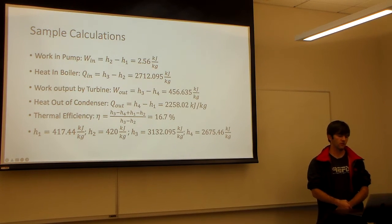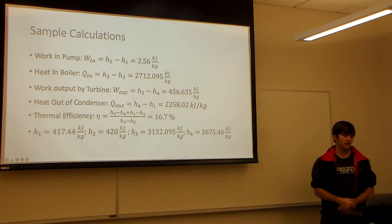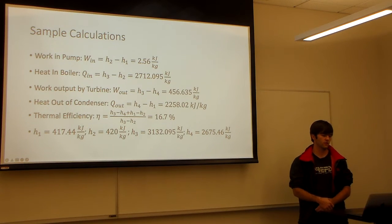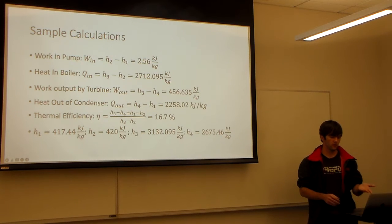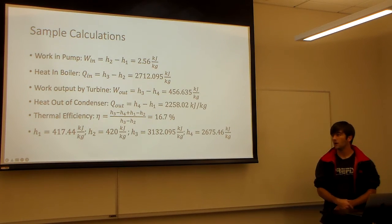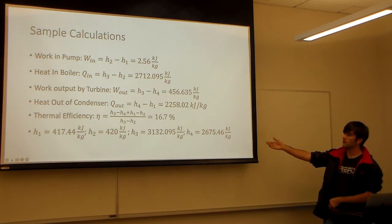And the heat out of the condenser is H4 minus H1. To find the thermal efficiency is that long equation there. You can see my enthalpy values there.